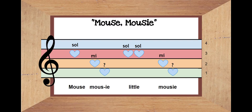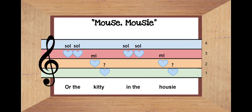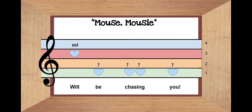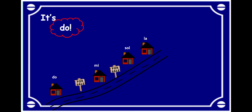I'll go ahead and sing — just listen. Mouse Mousy, little mousy, hurry, hurry, do. Or the kitty in the housey will be chasing you. Did you figure out every time you saw a heart with a question mark, what house was missing? It is doe. Doe is now the new house.